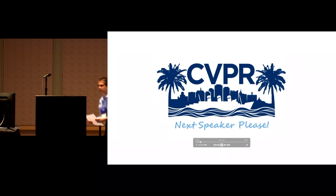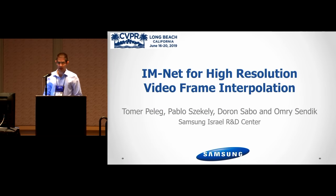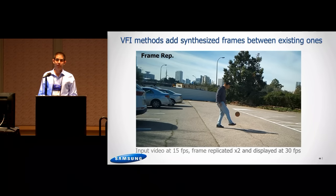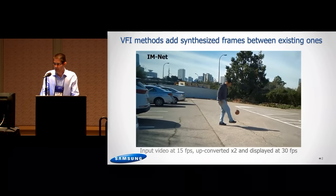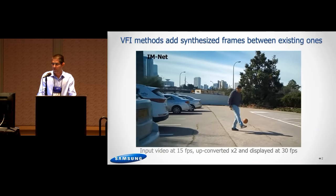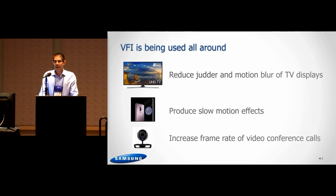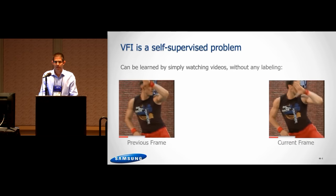This talk focuses on a problem that has remained unsolved until now: real-time video frame interpolation (VFI) at high resolution. The goal of VFI is to synthesize new in-between frames in a video while maintaining smooth motion. When you simply replicate frames, you end up with a jittery video. Using our method, Interpolated Motion Net (IMNet), you can get a visually pleasing video. VFI is used in TV displays for generating slow motion effects and in video conference calls. Unlike popular computer vision problems, VFI can be learned without any labeling by using the middle frame of a video triplet as ground truth.